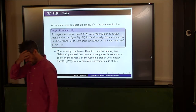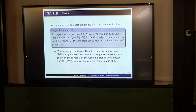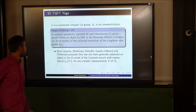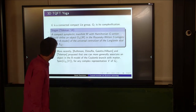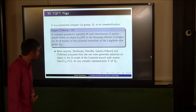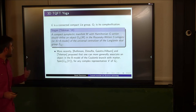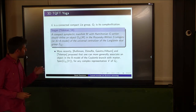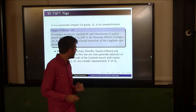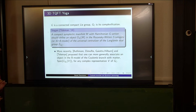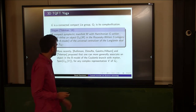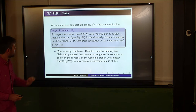Let me tell you what the story looks like to me. G will always be a connected compact Lie group, and G_C will be its complexification. What Teleman says in his ICM paper is that if you have a compact symplectic manifold with a Hamiltonian G action, then it should define an object in the Rozansky-Witten two-category — maybe it's Kapustin-Rozansky-Witten — the 3D B model that Justin was talking about.